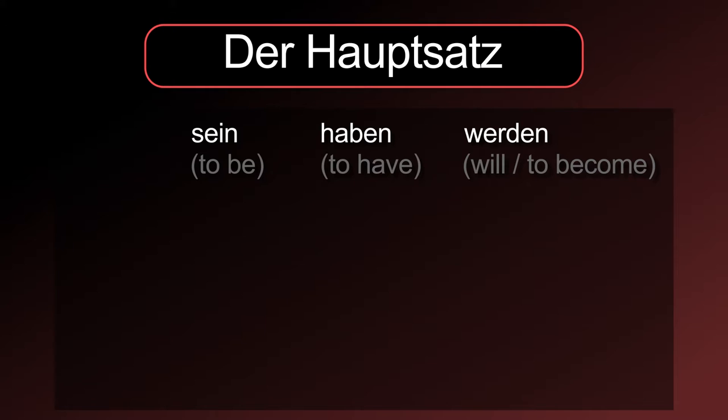Sein and haben are also used to build the past tenses, and werden is used for future tenses.